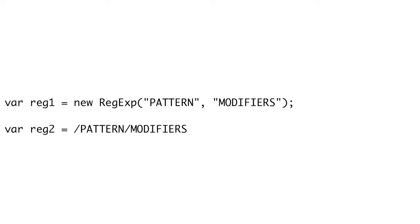A regular expression is made out of two parts: an expression string that uses letters, characters, and special sequences to define the pattern you want to look for; and modifiers, which make the regular expression act differently — for instance, making it case-insensitive. Each modifier is represented by a single character.